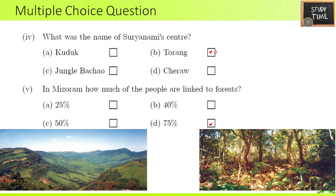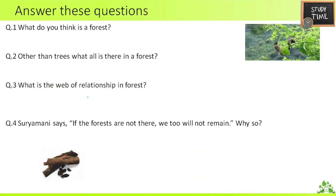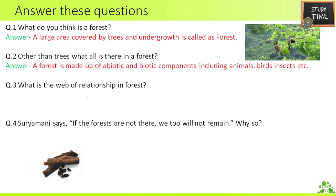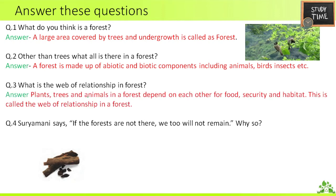75 percent of people in Mizoram are linked to forest. Now we will see question answers from this chapter. First — what do you think is a forest? A large area covered by trees and undergrowth is called a forest. Second — other than trees, what all is there in a forest? You can write abiotic and biotic components, including animals, birds, insects, etc.